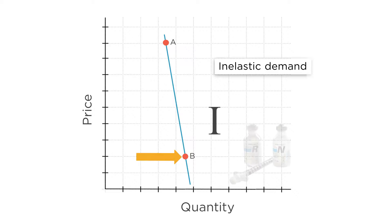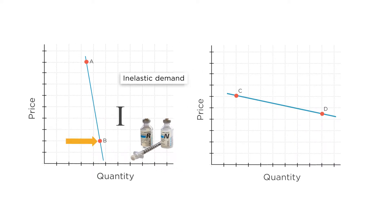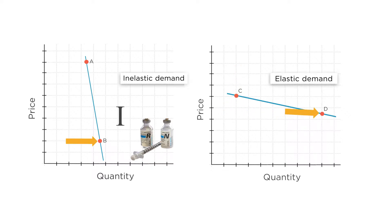You can remember inelastic because the curve looks like an uppercase I. This would be for stuff like life-saving medicine. The next graph is a case for a different type of good, where demand is very responsive to price changes. If you start at point C with a high price and lower the price to point D, the quantity demanded shoots to the right — demand is elastic. You can remember this because the demand curve is flat and looks like one of the three tongs on an uppercase E.